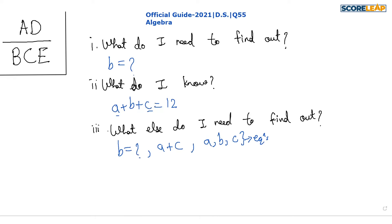Let us check what the first statement says. The first statement says that a + b = 8. From this statement we can figure out the value of c — that is 12 minus 8, which is 4 — but not b. B can be any number, as long as the sum of a and b is 8. So statement one is not sufficient.